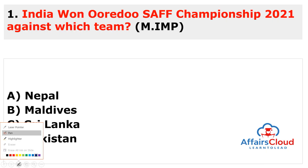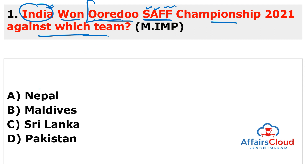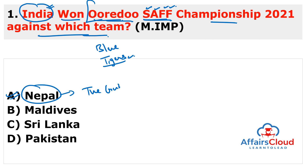The first question: who won the SAFF Championship 2021 and against which team? SAFF stands for South Asian Football Federation Championship 2021. The answer is India, and it was won against Nepal. The Indian football team, nicknamed the Blue Tigers, won the 2021 South Asian Football Federation Championship — also known as the AIFF SAFF Championship 2021 for sponsorship reasons — against Nepal's national team, known as the Gurkhas. The final was held in Maldives.